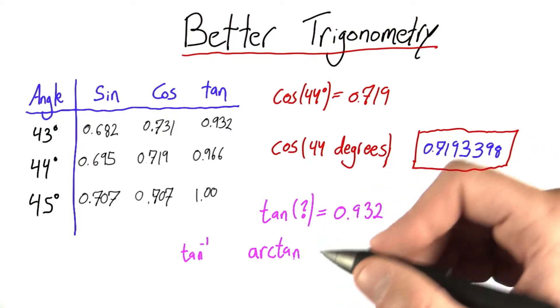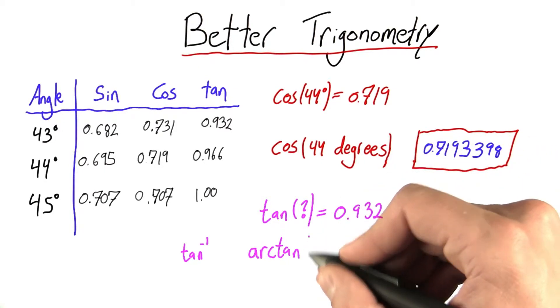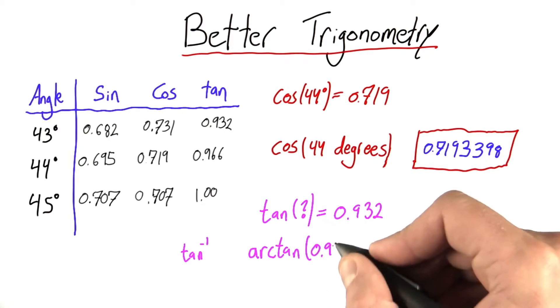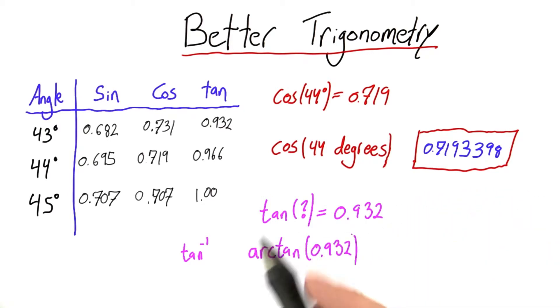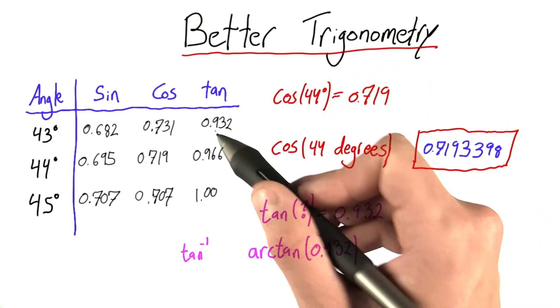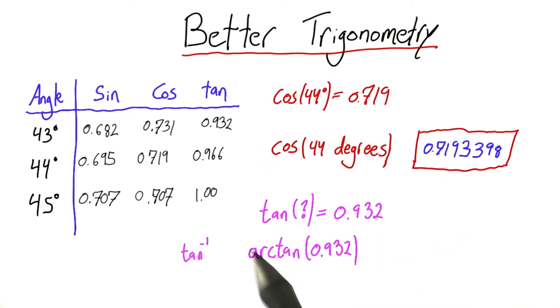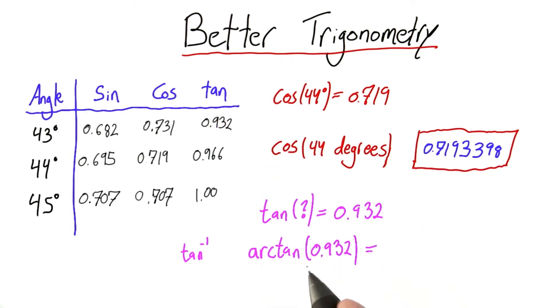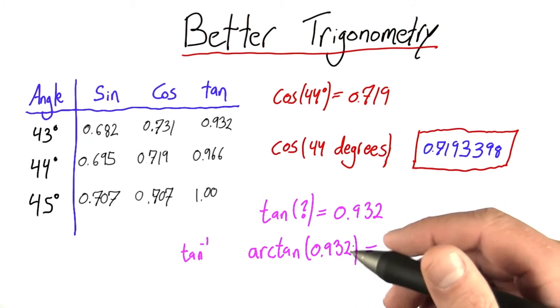So if you went into Google right now and you typed arctan of 0.932 - and remember, this is exactly the same step as looking up in the trig table - there is an angle whose tangent is 0.932. Arctan will find that out. So if we enter this into Google, arctan of 0.932,